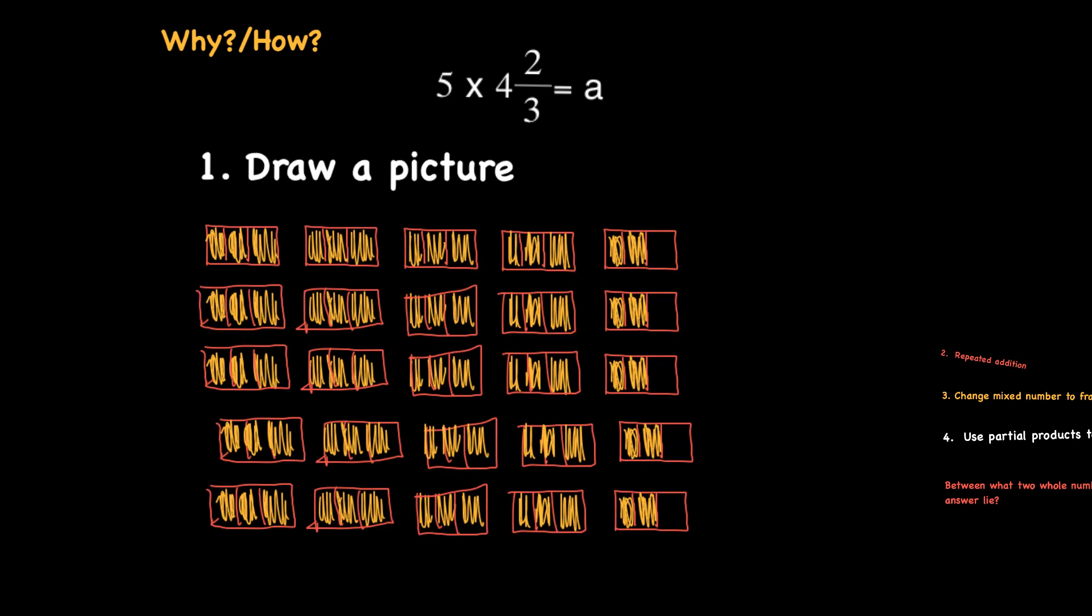So we're going to look at the problem 5 times 4 and 2 thirds equals A, and the first strategy that we're going to look at, which is one that we've used many times before, is draw a picture.